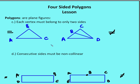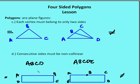The fourth criterion: consecutive sides must be non-collinear. If I have a polygon ABCD on my left, that would be a polygon because the consecutive sides are non-collinear. On the right-hand side, polygon ABCDE would not be a polygon because it has two consecutive sides, AB and BC, that are collinear. So the example on the left is a polygon; the example on the right is not.